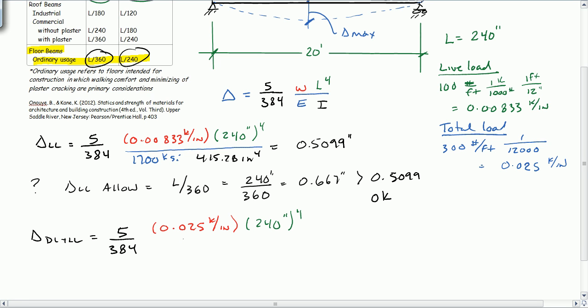Divided by 1700 KSI times 415.28 inches to the fourth. And when we do the math here, we get 1.53 inches.